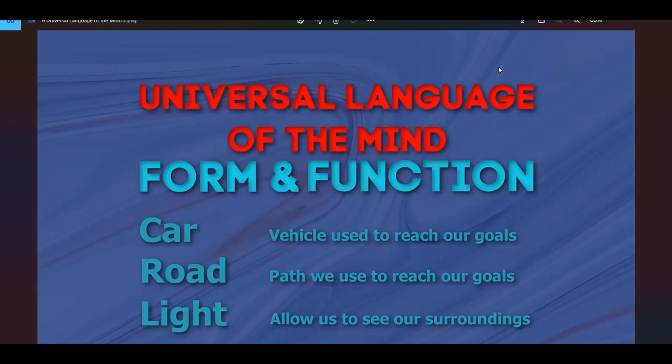So on to the next one, the road. The road is the form. And how does the road function? The function of the road is to give us a path in order to reach our destination, reach our goals. So how does that relate to the consciousness? The path that we are on to reach our goals is our life path in this life, that our vehicle, the path that our vehicle uses to reach our goals. So our path in life.